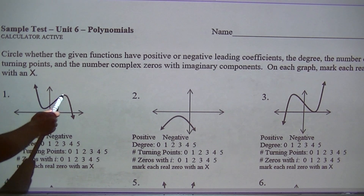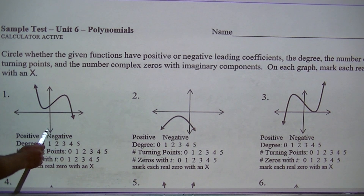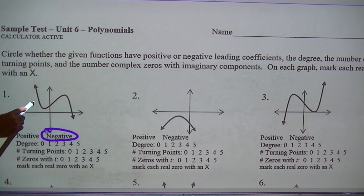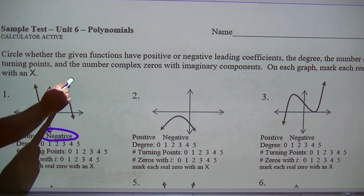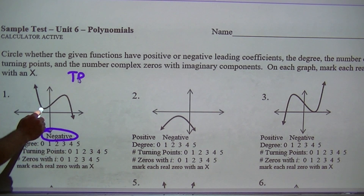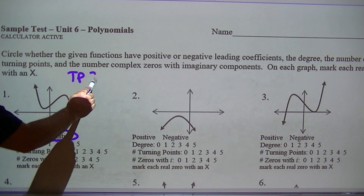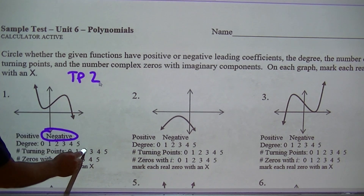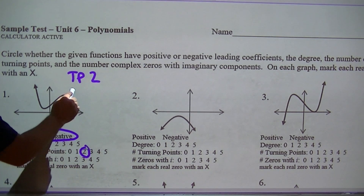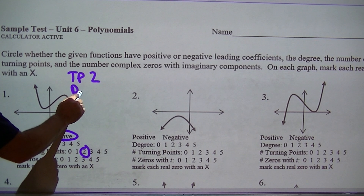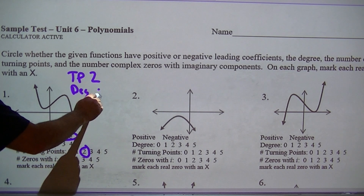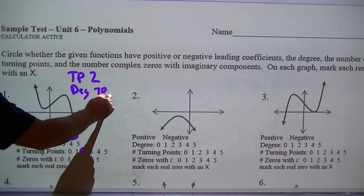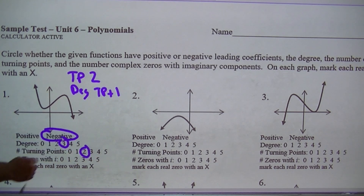This is considered a negative. The biggest thing to figure out is your turn points. I've got one, two turn points. The idea to get the degree is you take your turn points and add one. So I have degree three there.